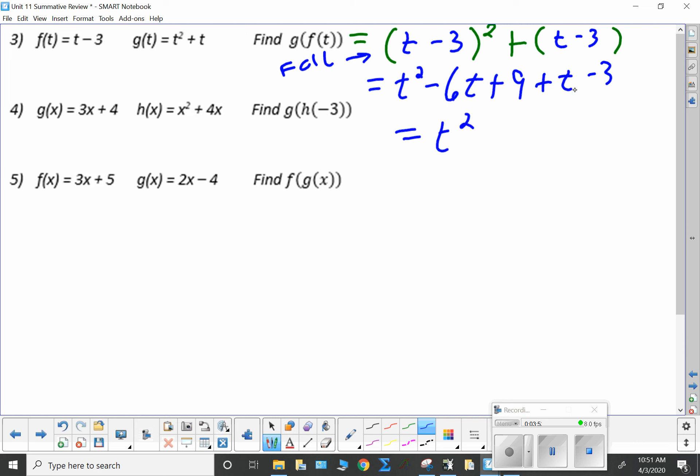Combining your like terms gives you t squared minus 6 plus 1 is minus 5t. 9 minus 3 is 6. And here's your answer.